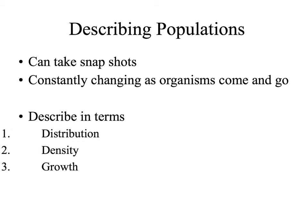We are going to start with populations. To describe populations, we generally take snapshots of what's going on right then and there. Populations are dynamic — they are constantly changing as organisms come and go, live and die. We can describe our population in three major ways: distribution, or how those organisms are spread out; density, how many there are per unit of area; and growth, so how quickly the population is increasing, decreasing, or whether it is stable.